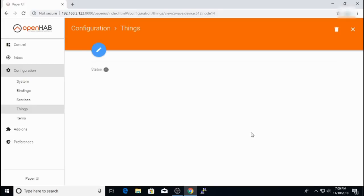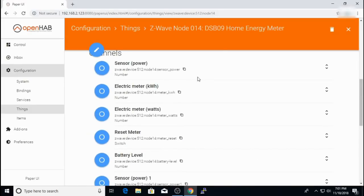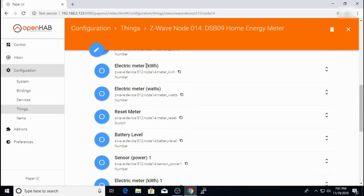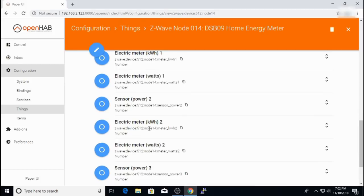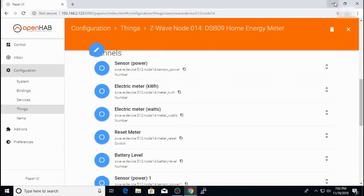So if I show the thing now, these are the channels that I have available from the meter, including power meter and kilowatt hours and watts, battery level, and all the readings broken out by phase. So now I can go ahead and set up the items for these channels and add them to my sitemap, HAB panel, or build charts with the data.